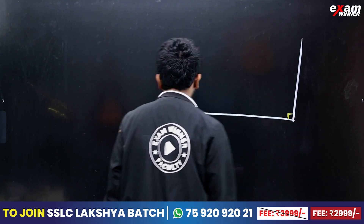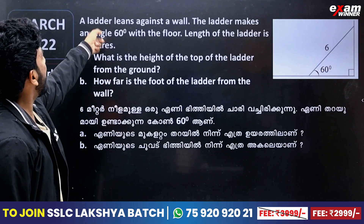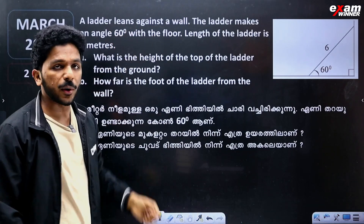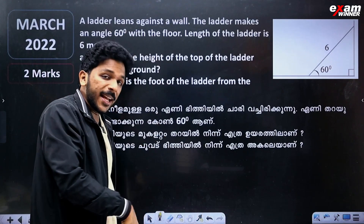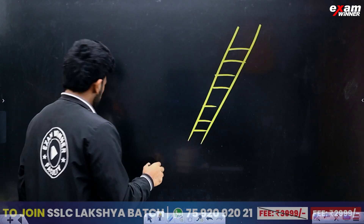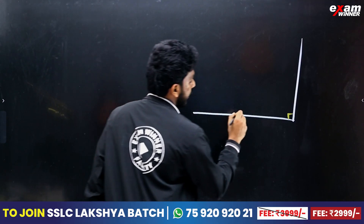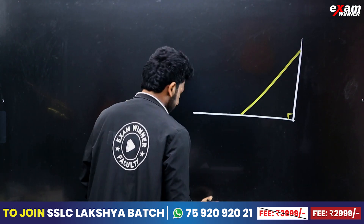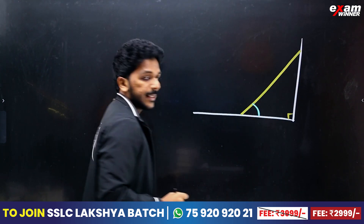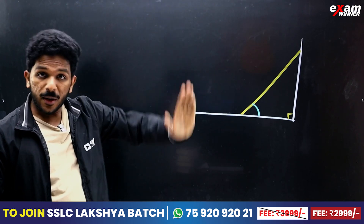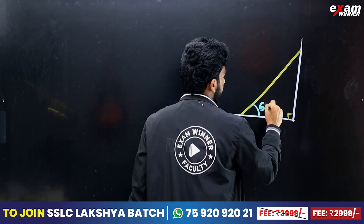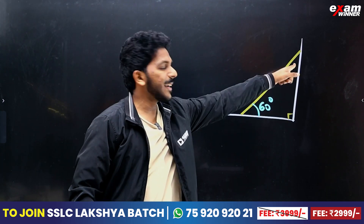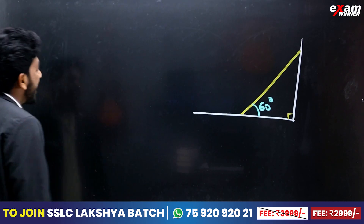We are under 90 degrees. Now the ladder leans against the wall at a good angle. The ladder makes an angle of 60 degrees with the floor. That's 60 degrees. What angle is 60 degrees? This is the wall. So this is 60 degrees, this is 90, and then it's 90. This is 60 and 90.